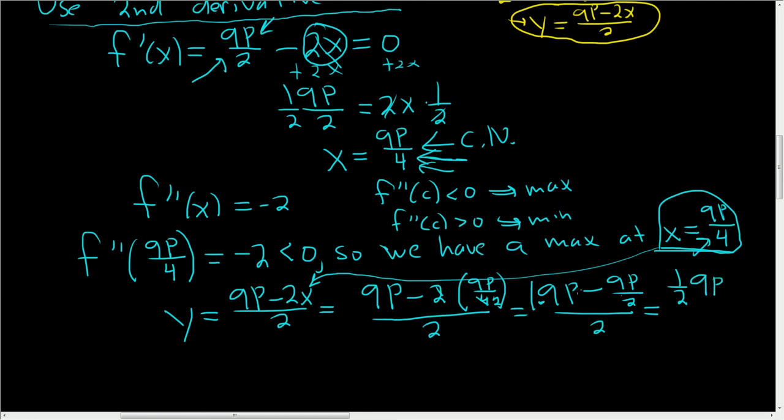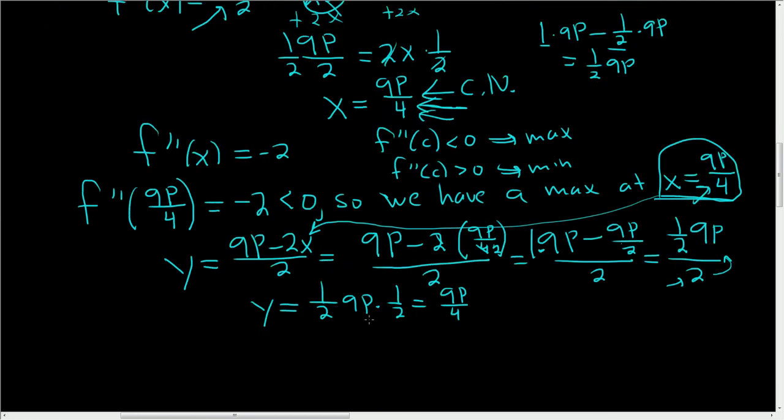That's a little tricky. Think of it this way. We have 1 times 9p minus 1 half times 9p. So 1 minus 1 half is 1 half times 9p. Kind of a cool way to do it. And we're dividing this by 2. When you divide by 2, you really multiply by the reciprocal. So y is equal to 1 half times 9p times 1 half, and so that's 9p over 4. 1 half is the reciprocal of 2. So it looks like we end up with the same answer for both x and y.